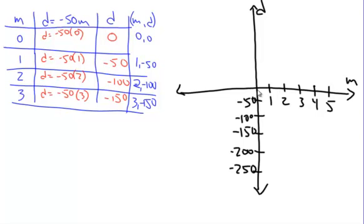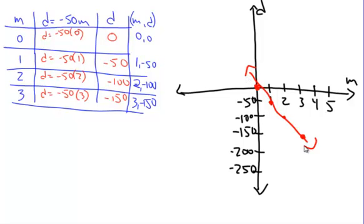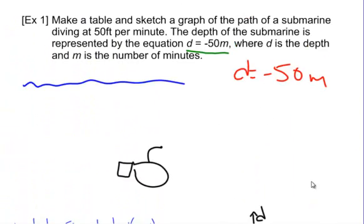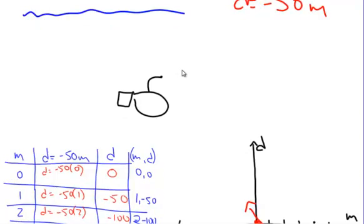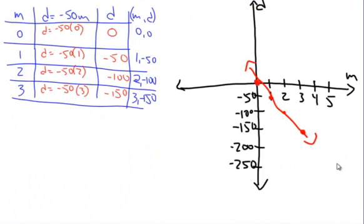Let's plot them: 0,0 then 1, negative 50 then 2, negative 100, and 3, negative 150. There's our nice function. And notice, if we were to do the vertical line test, it would be perfect — it would never cross two spots at once. So that's the function of the submarine diving at 50 feet per minute, and that is exactly the equation of our function.